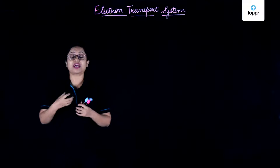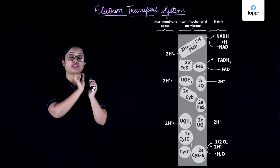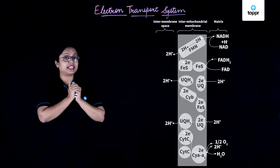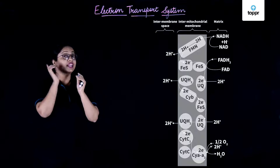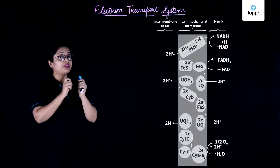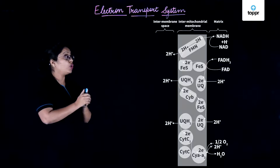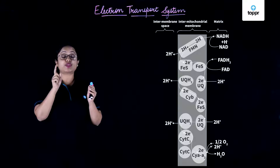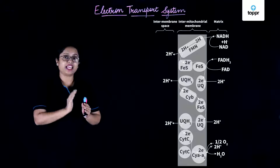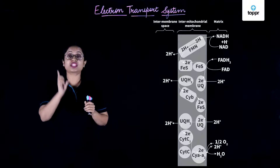Now let's see how it occurs. It mainly occurs in the inner membrane of mitochondria. As you can see in this diagram, the NADH₂ formed during the Krebs cycle in the matrix of mitochondria will release their electrons into the inner membrane of mitochondria. That means the NADH₂ is getting oxidized. The enzyme used here is NADH dehydrogenase, and this is known as Complex I.